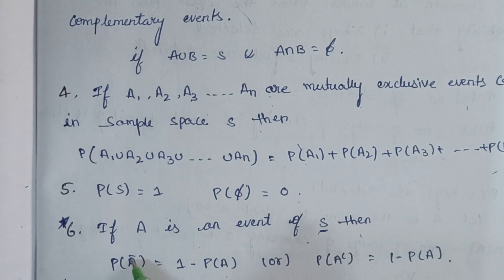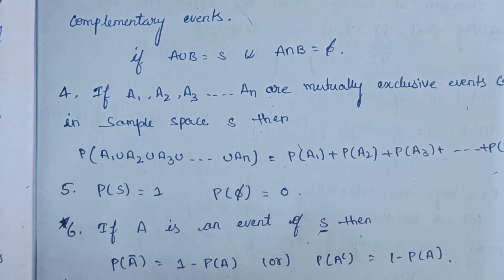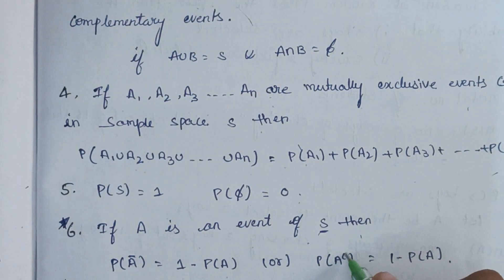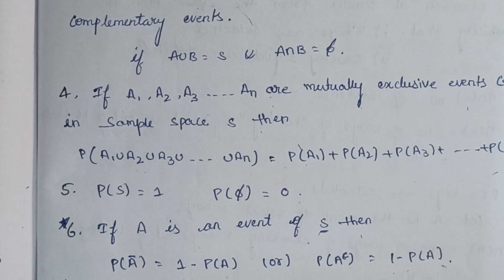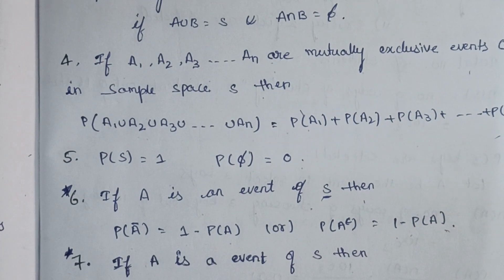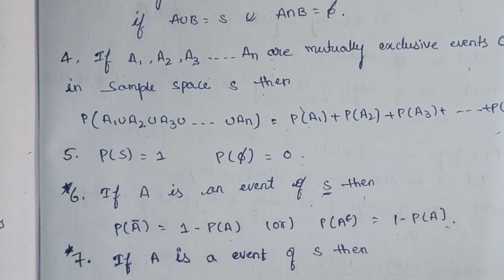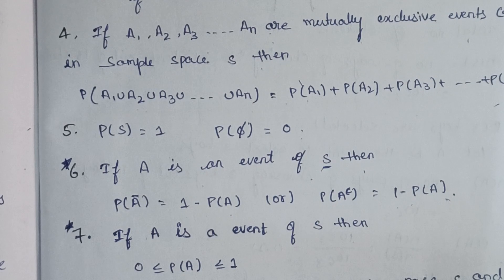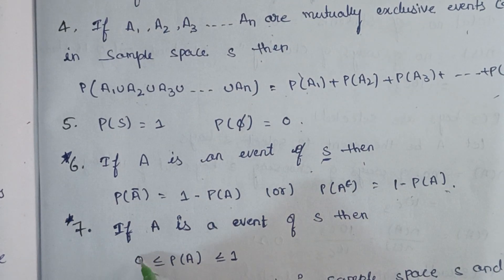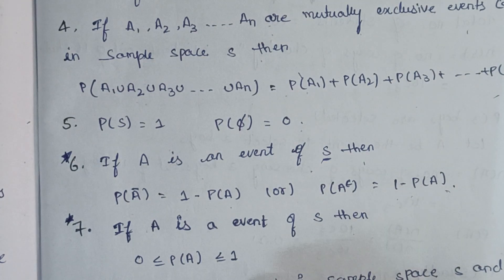The complement of A — P(A bar) or P(A complement) — is equal to 1 minus P(A). Also if A is an event of sample space S, then 0 is less than or equal to P(A) is less than or equal to 1. This is because probability always lies between 0 and 1.